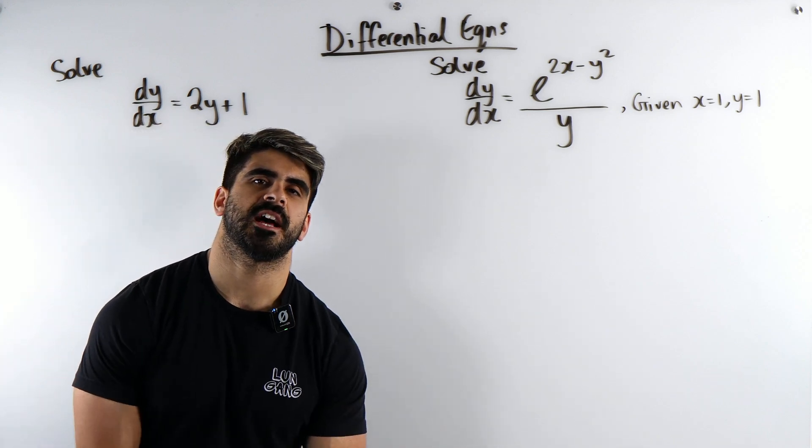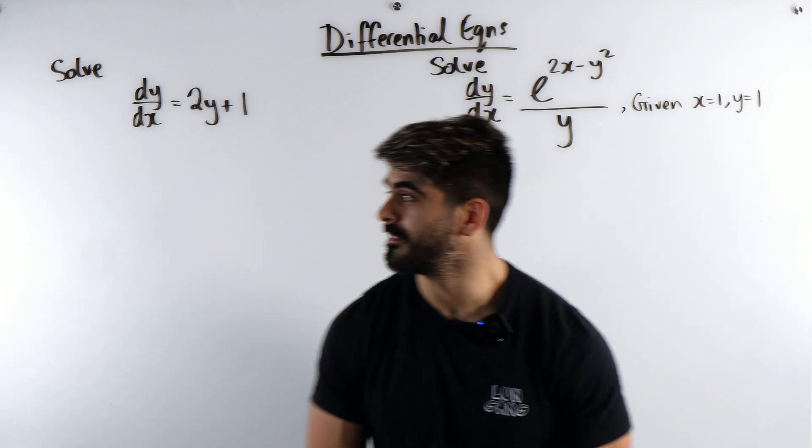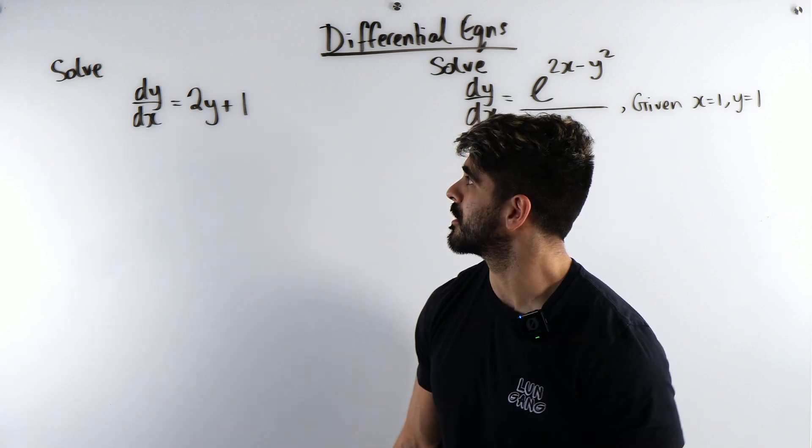Lundgang special differential equations. First one, dy by dx equals 2y plus 1.